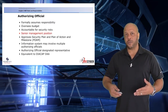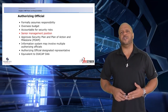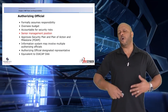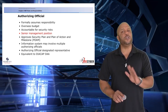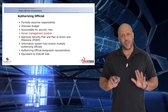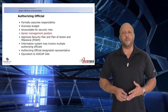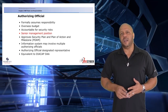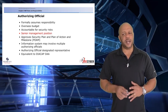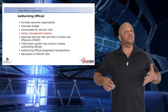That brings us to the authorizing official. They are the individual that formally assumes the risk and responsibility of the information system itself. They oversee the budget for all requirements and are accountable for all security risks. They must be in a senior management position — that does not mean executive management. There is no requirement within the NIST guidelines that the AO needs to be a flag-level officer, just senior management. Within the DoD structure, that could be as low as a GS-14.